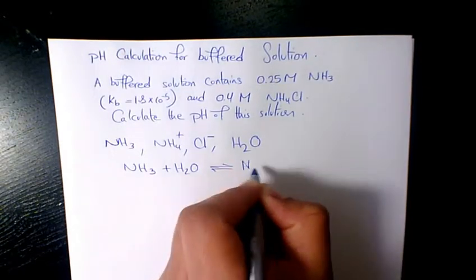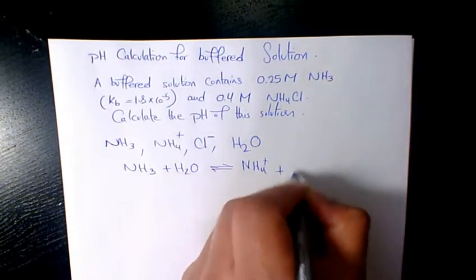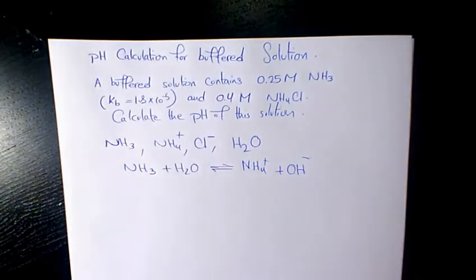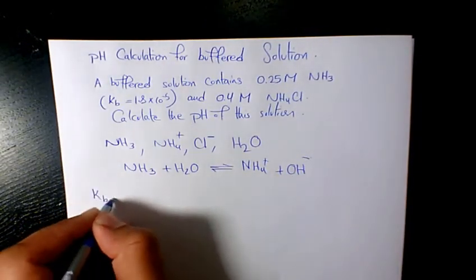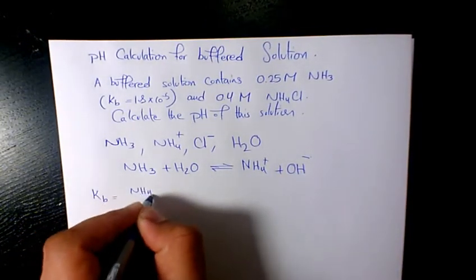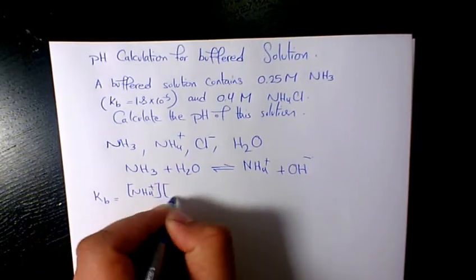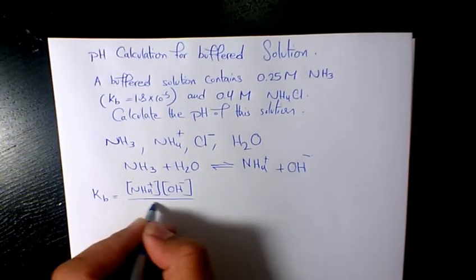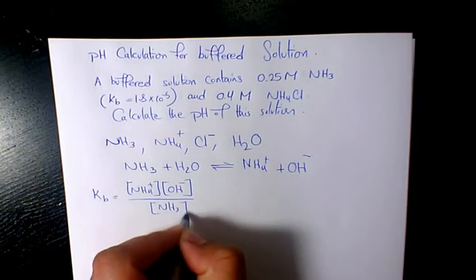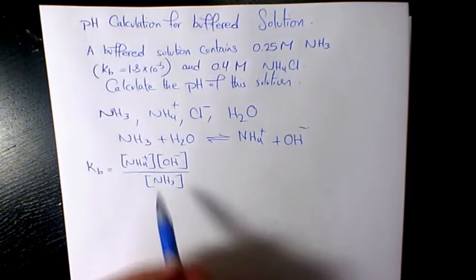So Kb will be NH4+ times hydroxide divided by NH3 at equilibrium condition.